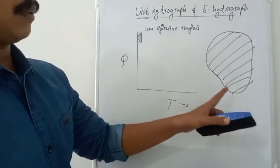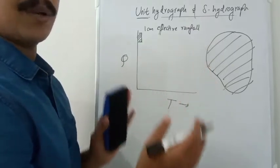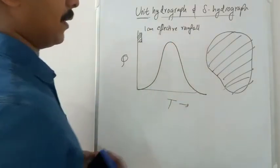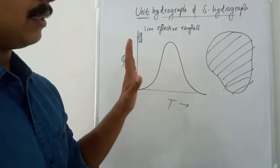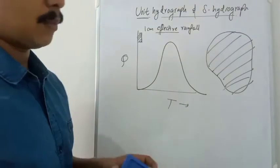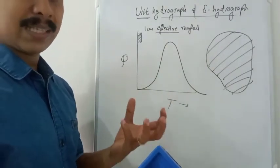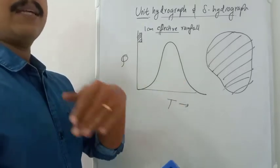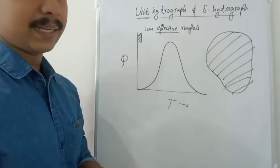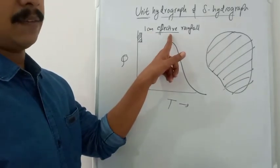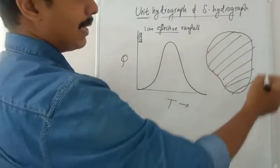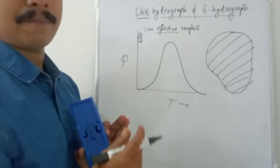This is a direct runoff hydrograph. The unit hydrograph is defined for one centimeter of effective rainfall — effective rainfall is not the total precipitation but what remains after infiltration — producing a single peak hydrograph, acting on the entire basin uniformly for a specific duration of time, such as one hour.